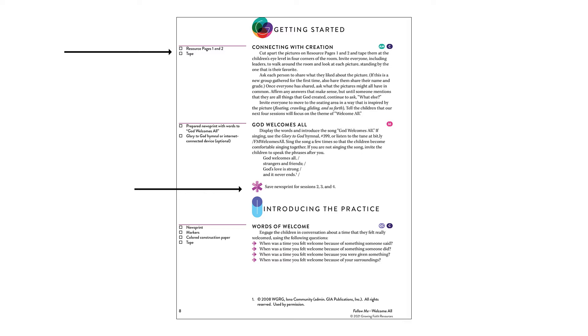There are also asterisks throughout the curriculum, and those are different teaching tips. You'll definitely want to pay attention to those when they show up — they give you helpful information about adapting activities for different skills, age levels, or disabilities, and include best practices and other great suggestions as you go through different activities.